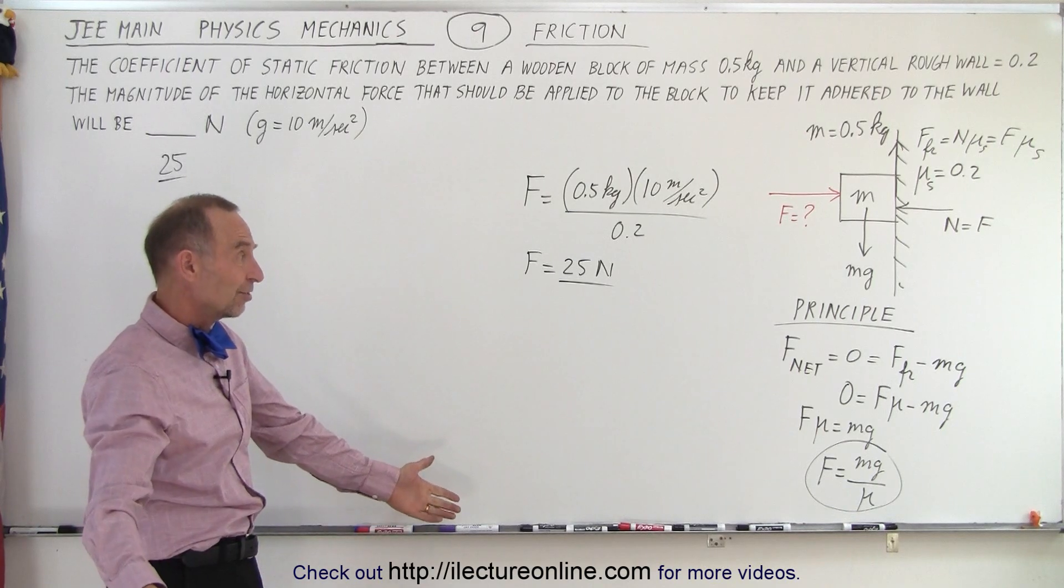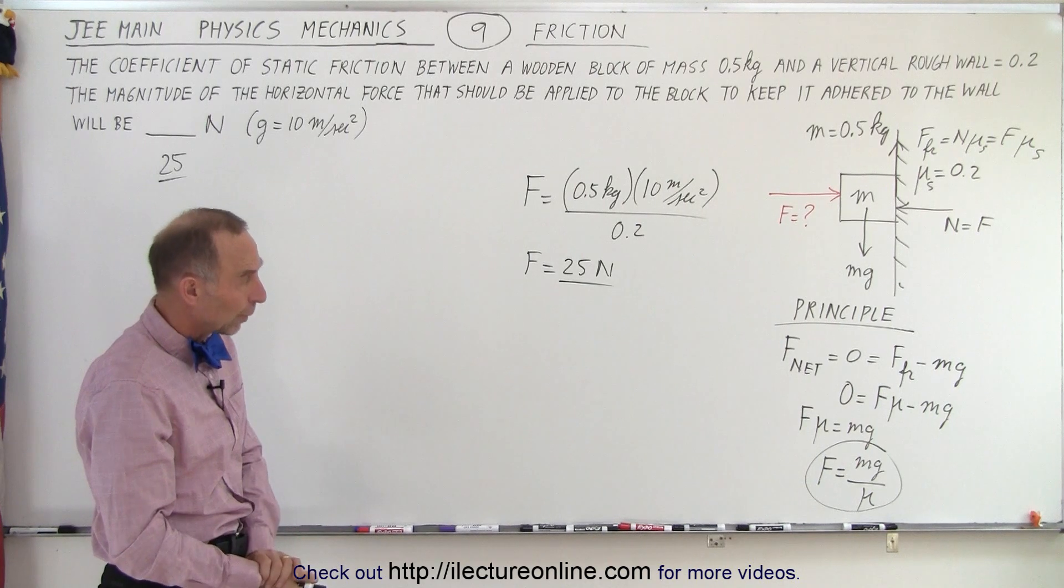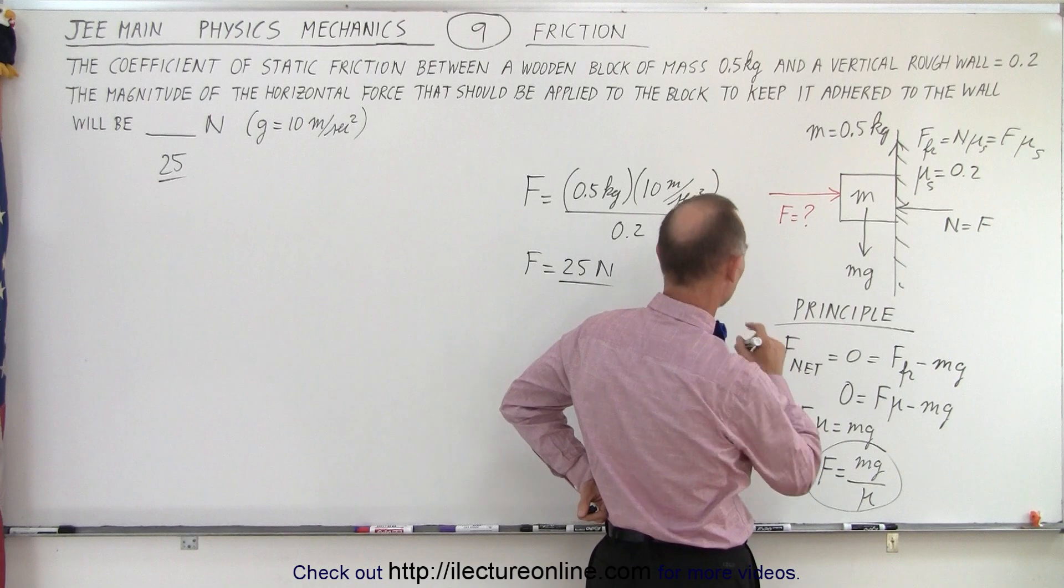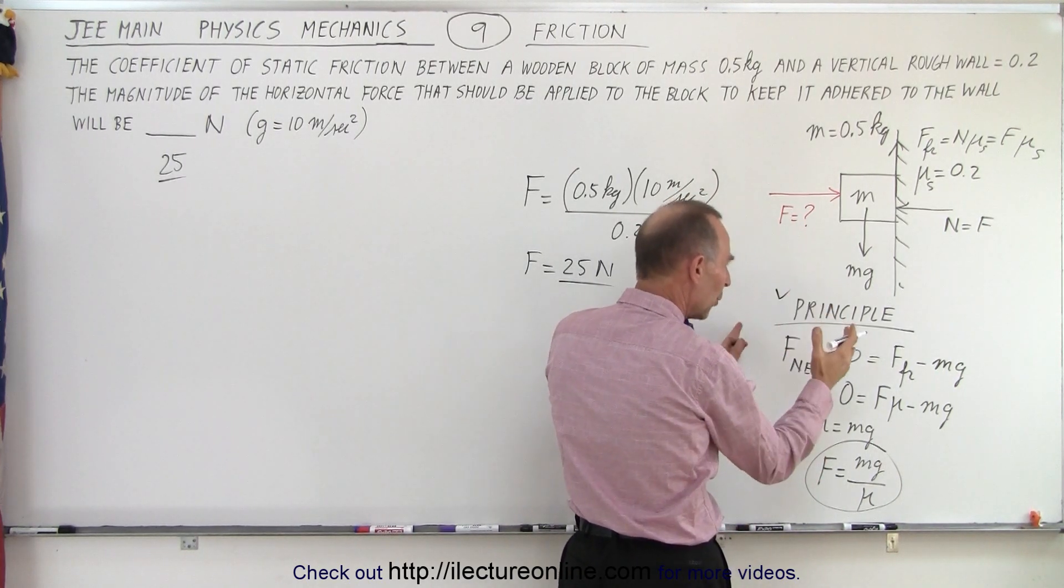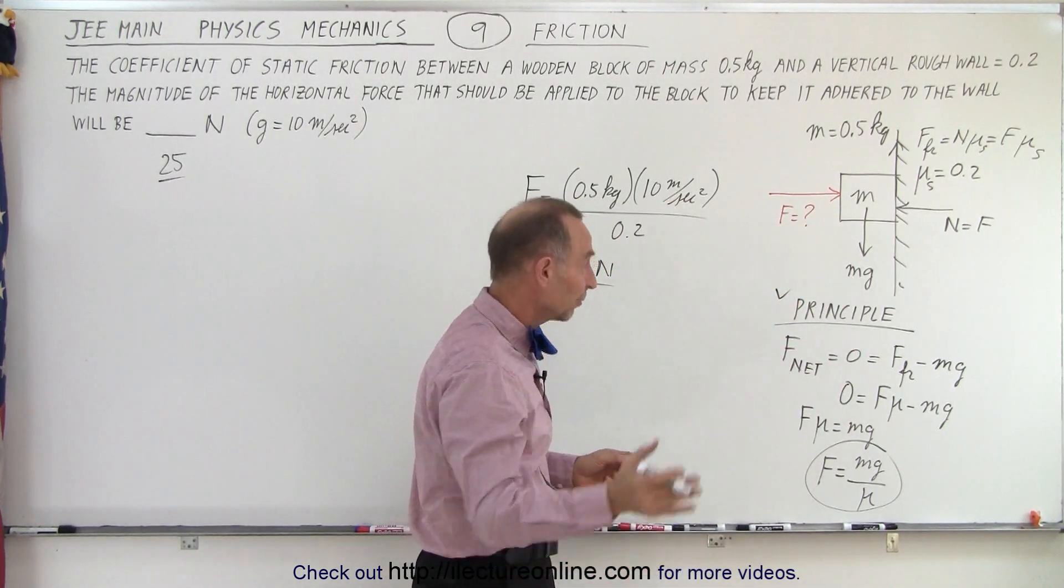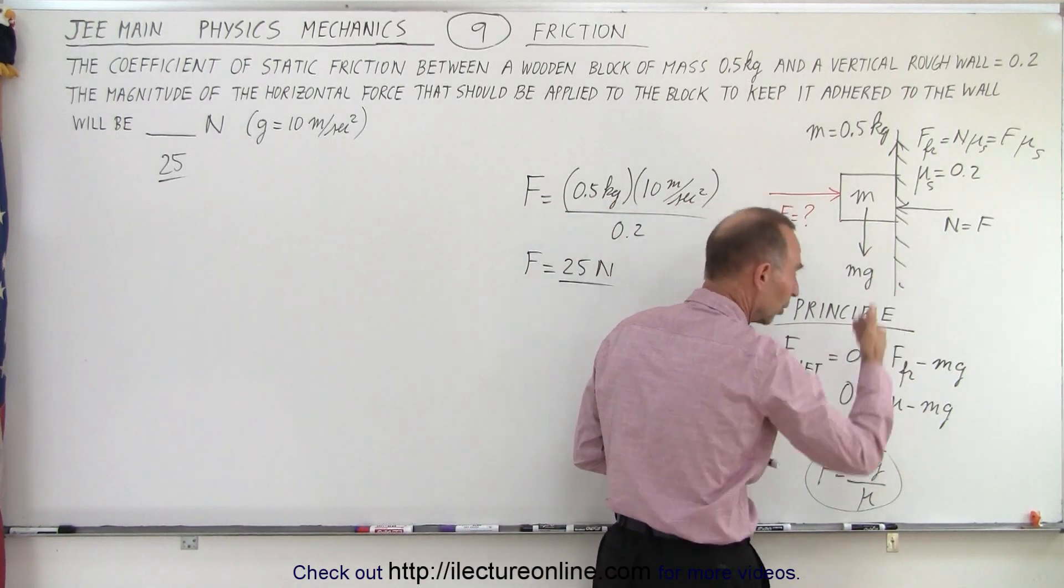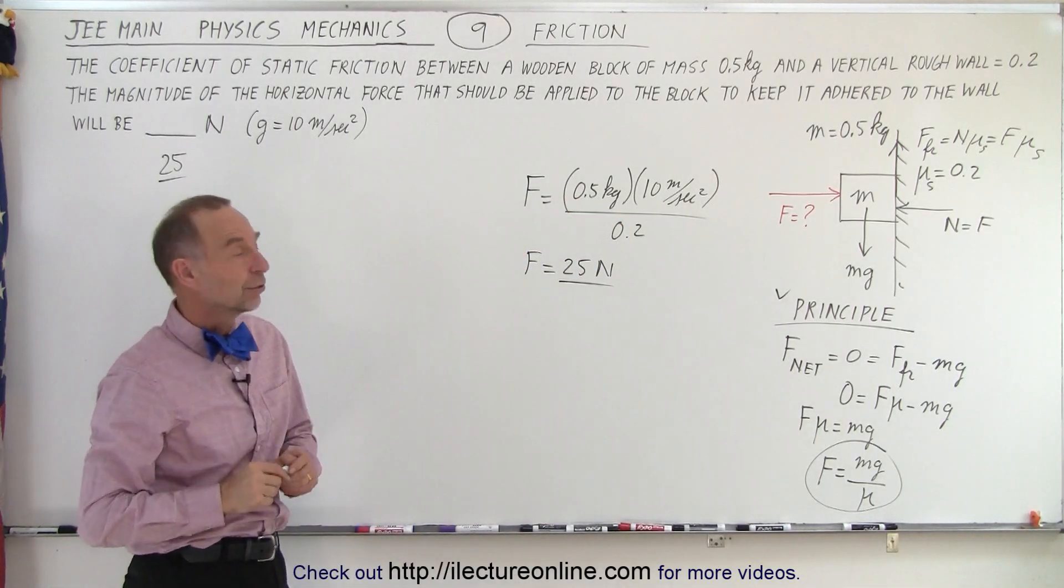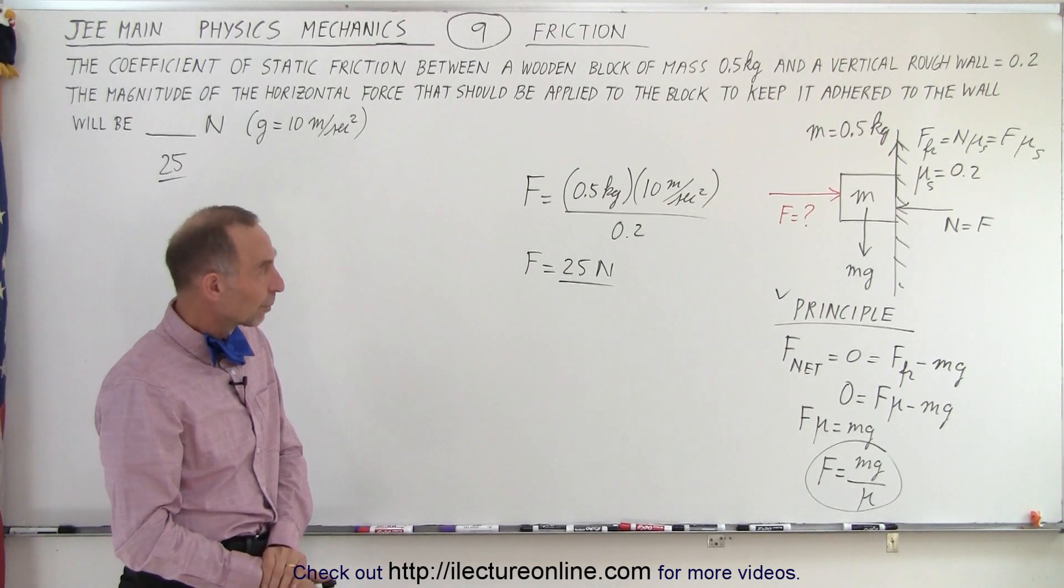So notice it's a pretty straightforward problem, something you see in a typical physics book, something that can be done fairly quickly. Again, you want to think of the principle, is knowing that the net force must equal zero for nothing to move. Once one force becomes bigger than the other, once mg becomes bigger than the friction force, there will be net force and the block begins to slide. So that's how we figure out the force required to keep it. And so it requires a minimum of 25 newtons of force to keep the block from sliding.